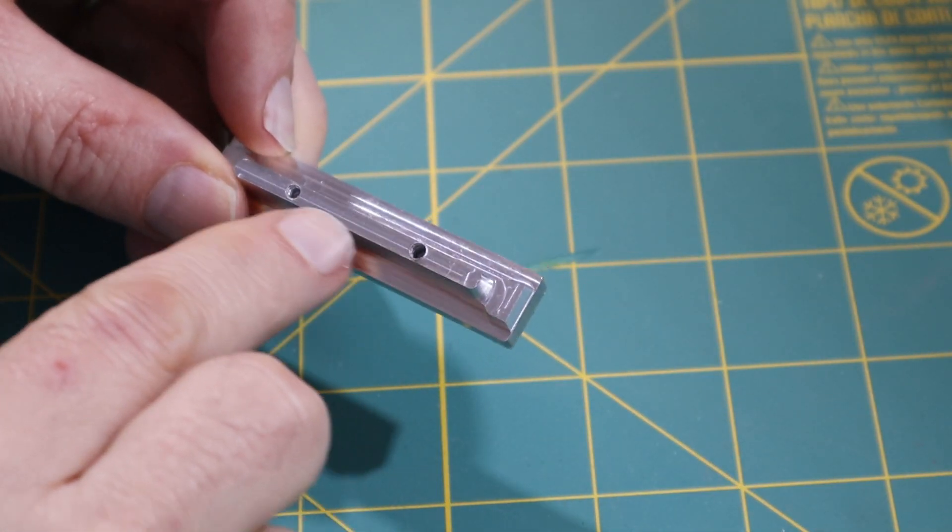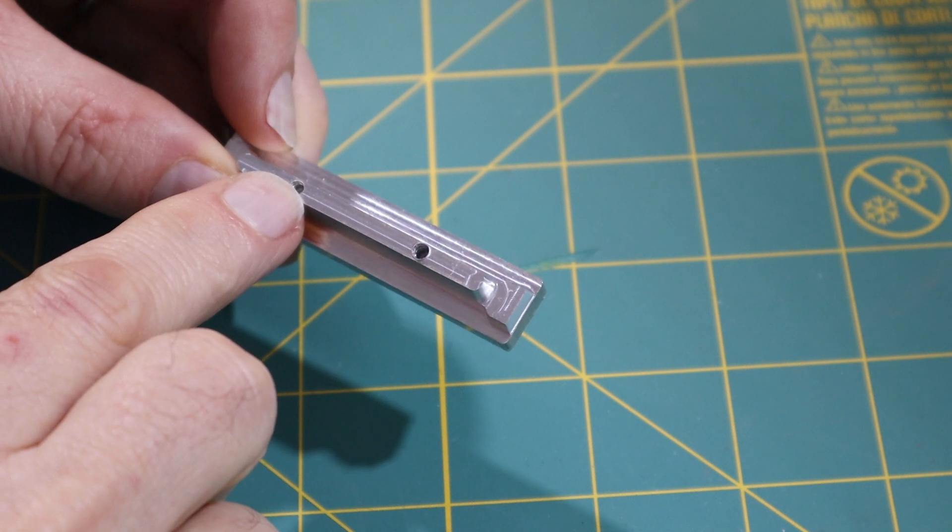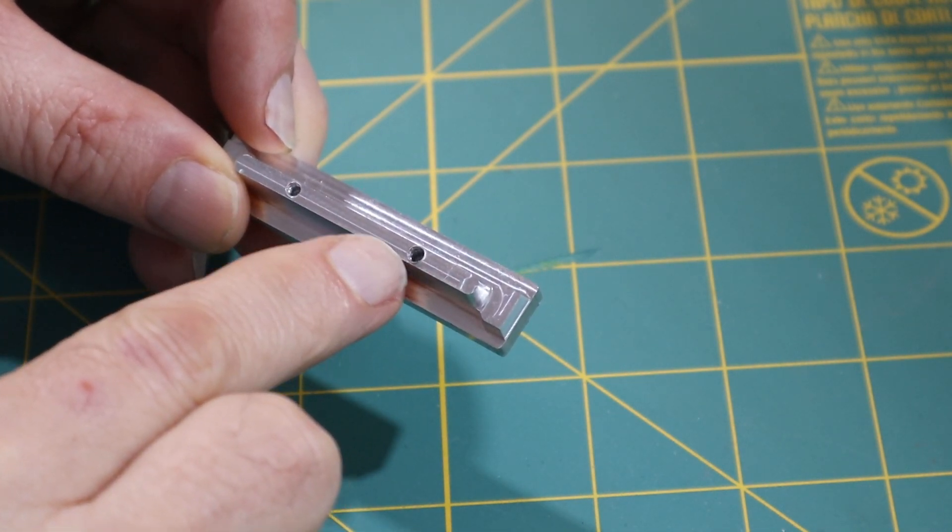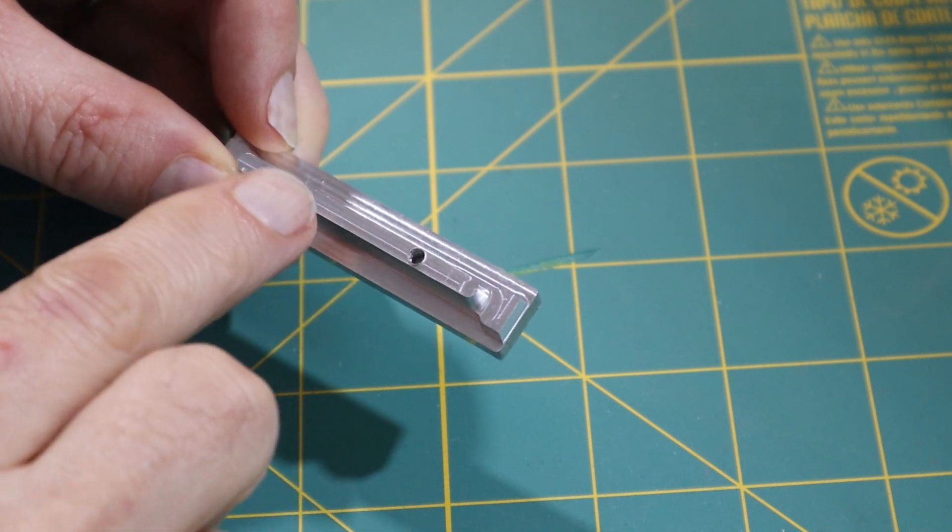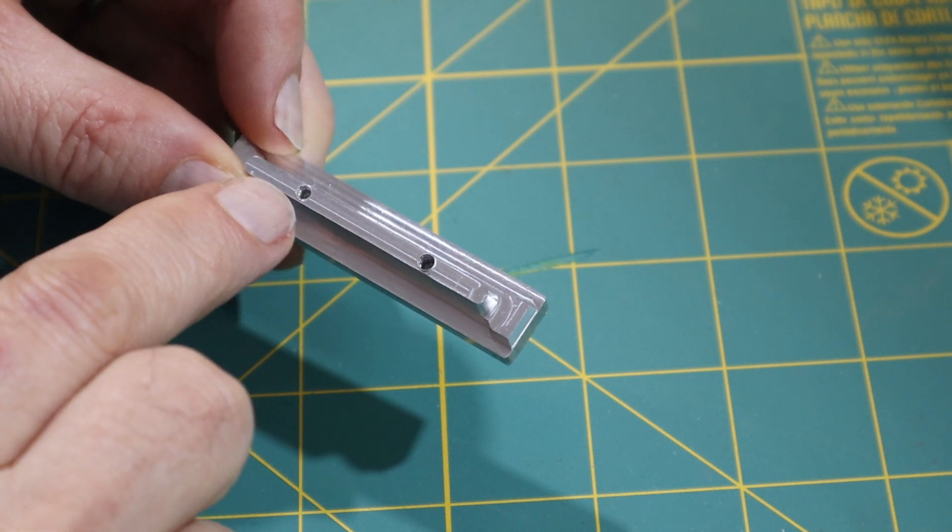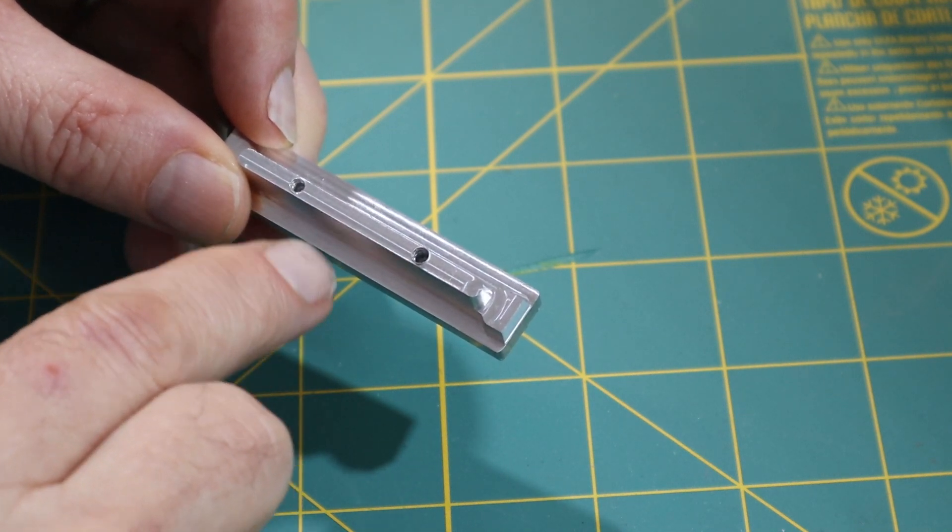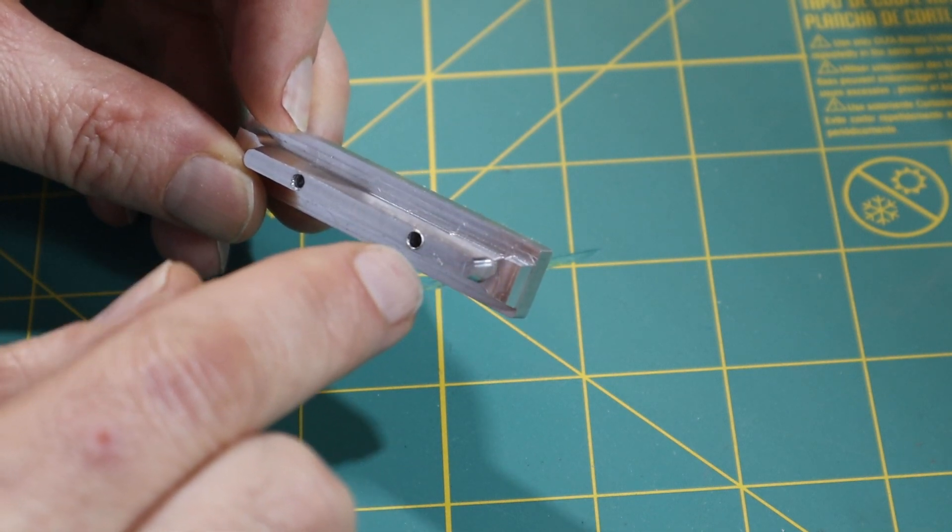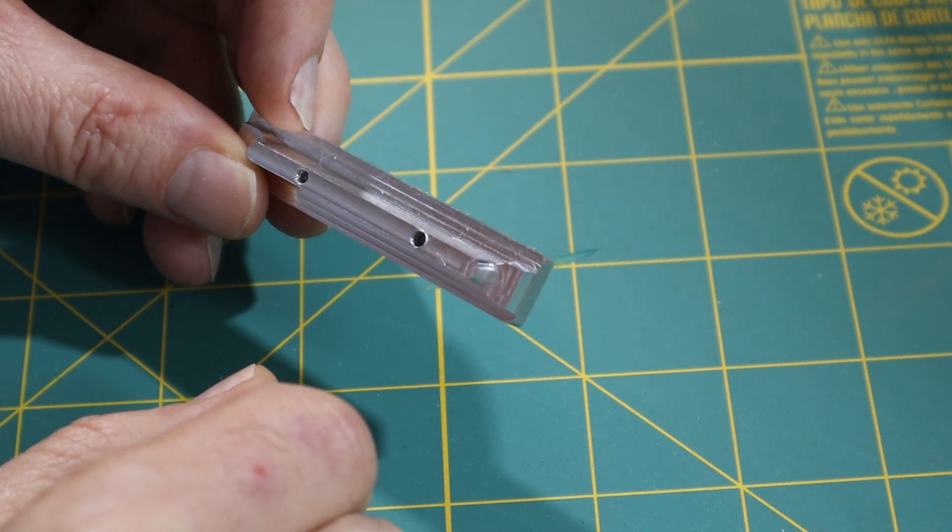After I tapped these holes, what I discovered is that these holes were not really deep enough for the tap that I was using. I don't have a bottoming tap, so I ended up stripping one of these with the tap, which is pretty bad. So I decided to redesign the part and move these screws out to the point where I could drill them all the way through and tap them all the way through.